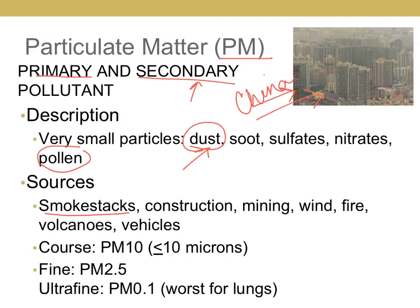We have different kinds of PM that you need to memorize. We classify them as coarse — remember a micron is 10 to the negative 6 — so if it is about 10 microns or less, then it's called coarse. If it's about 2.5 to 10 microns, it's fine. Starting at 0.01 microns is your ultrafine, and this is the worst for the lungs. The body has mucous membranes in your lungs and nose that capture a lot of particulates.